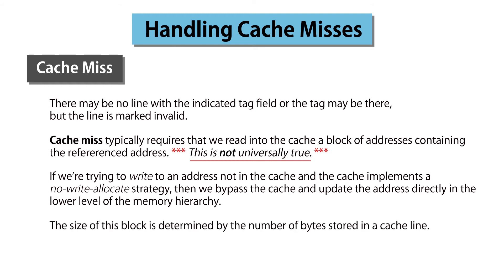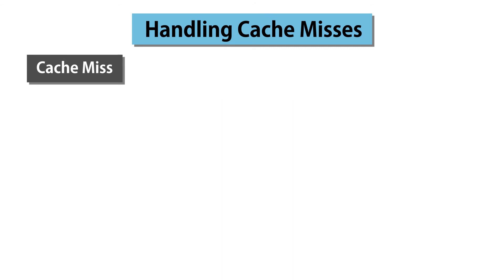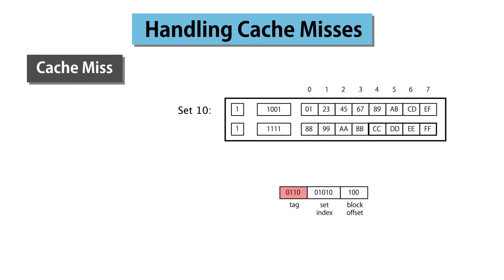Let's ignore that special case and assume that any miss requires copying a block of data into the cache. The size of this block is determined by the number of bytes stored in a cache line. For our example, each line contains 8 bytes. Thus, for any cache miss, we'll always fetch 8 bytes of data. Suppose for our previous example that we had a cache miss because neither of the lines in set 10 had the indicated tag field. Whenever there's a cache miss, we have to read in a line of data — that is, we need to fill one of the lines in the set with 8 bytes of data from memory. All 8 addresses must have the same set index bits and the same tag bits as our requested address, which only leaves the 3 block offset bits to specify. These can vary from 000 to 111. Consequently, the 8 addresses we read from memory must be these.